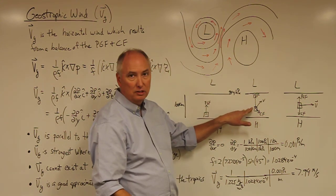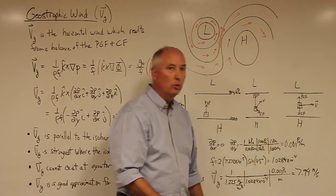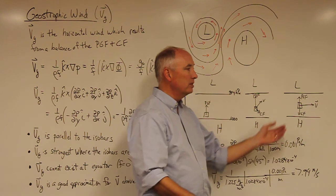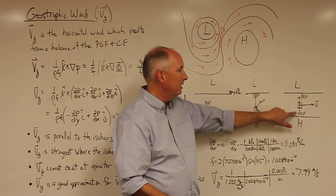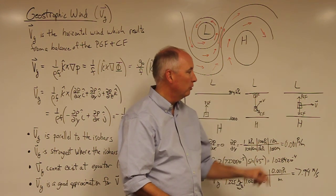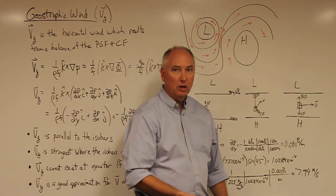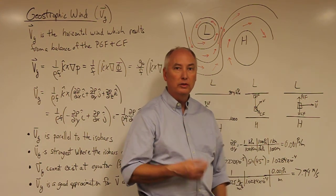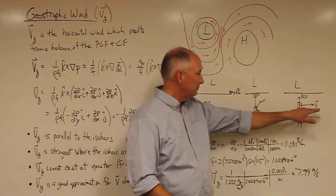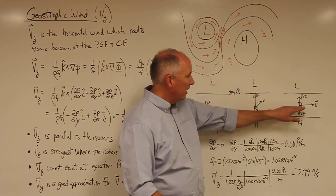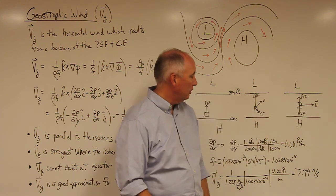This is still not a balanced force diagram, so the air parcel continues accelerating somewhat toward the low. Eventually, once the velocity — and therefore the Coriolis force — becomes large enough, the Coriolis force is exactly equal and opposite to the pressure gradient force. At that point, the net force on the air parcel is zero, and it moves with a horizontal velocity equal to the geostrophic wind Vg. At this force balance, the geostrophic wind blows parallel to the isobars.